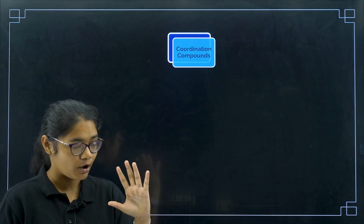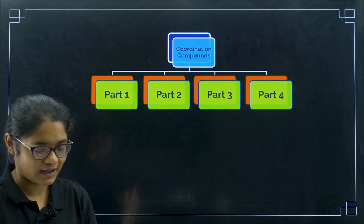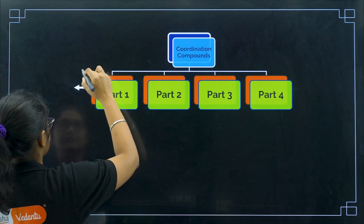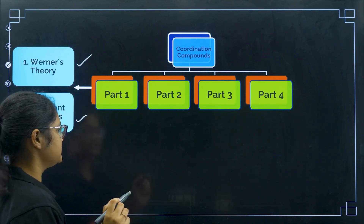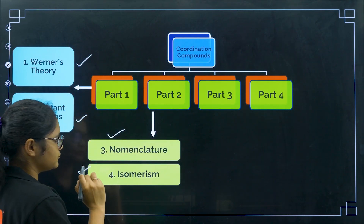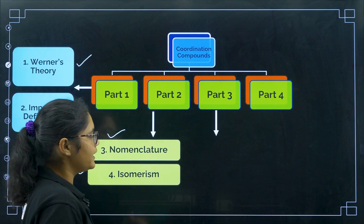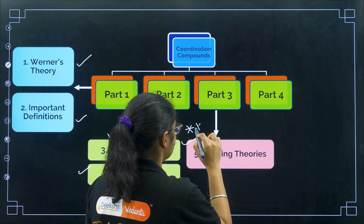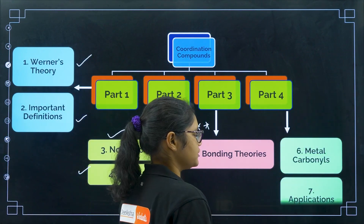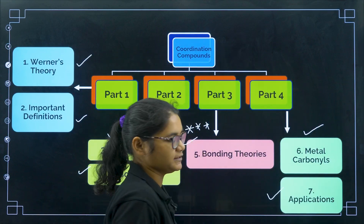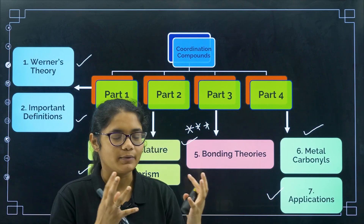Let me revise how we have completed this chapter. In part one, we discussed Werner's theory and some important definitions. In part two, we completed nomenclature and isomerism — the most interesting, easy, and scoring part. In part three, bonding theories — the most important topic from where a majority of questions are asked. Today we do part four: metal carbonyls and applications, which are very easy to score.